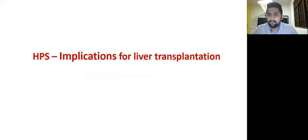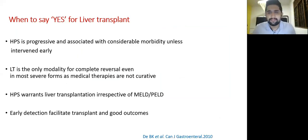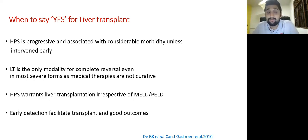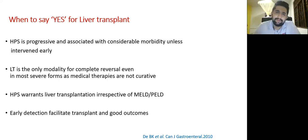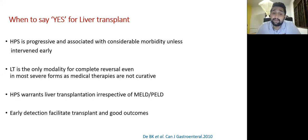Hepatopulmonary syndrome is progressive and associated with considerable morbidity unless you intervene. You should intervene early rather than delaying. Liver transplantation is the only modality resulting in complete reversal of this condition. Different medical therapies have been tried but none have given promising results. Importantly, hepatopulmonary syndrome warrants liver transplantation irrespective of the MELD or PELD score.